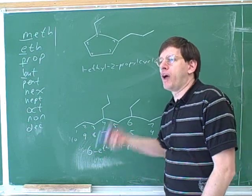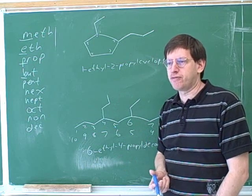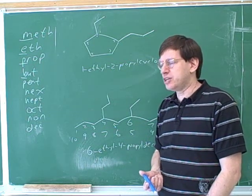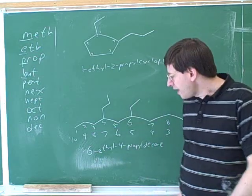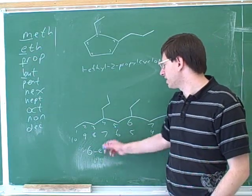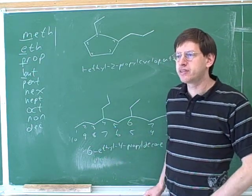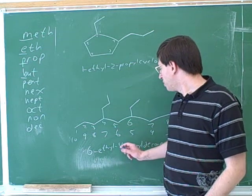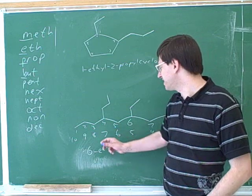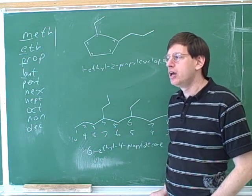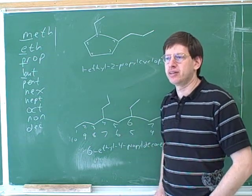So there's one thing that we always use alphabetization for and one thing that we rarely use alphabetization for. We always use alphabetization to decide what order to list the substituents — because how else would you do it? Notice that we don't list them in order of longest chain, and you don't list them in order of their locator. The ethyl is the shorter substituent but it gets listed first. Propyl has the lower locator but it still doesn't get listed first. We always use alphabetization to decide what order to list the substituents.